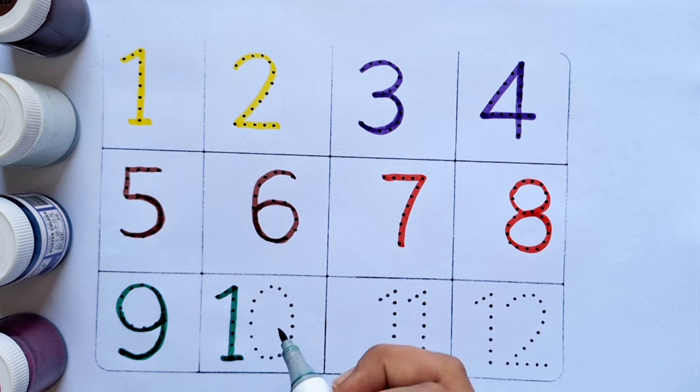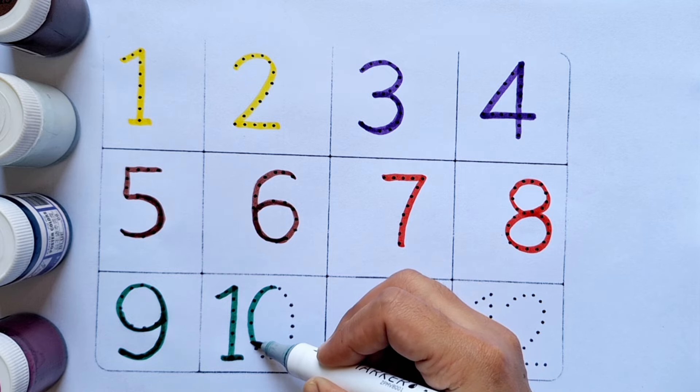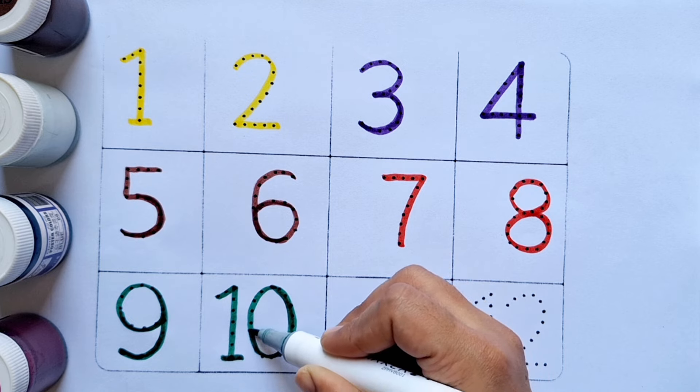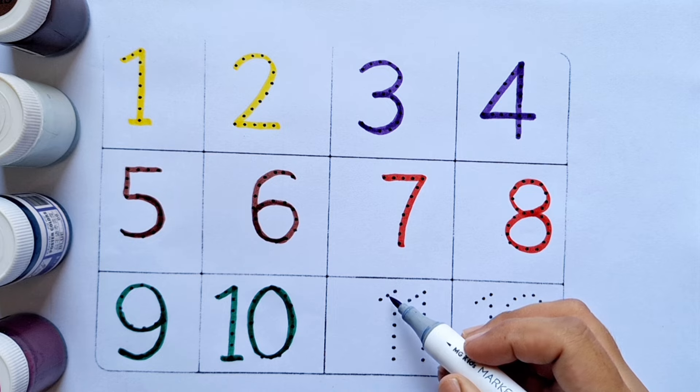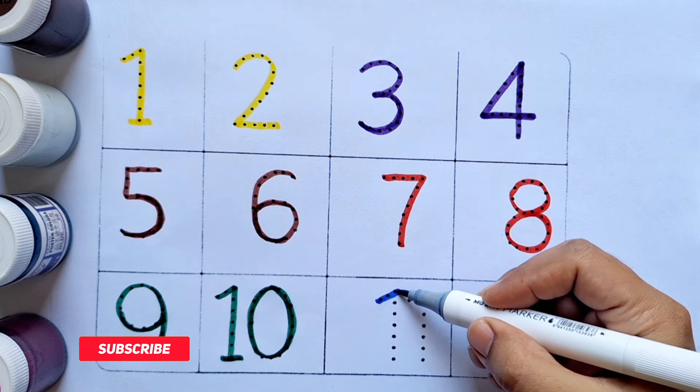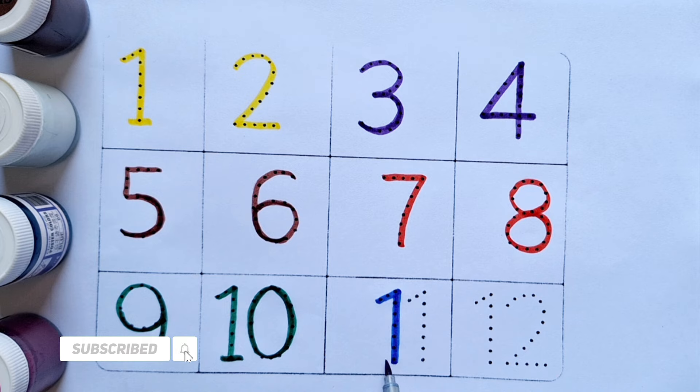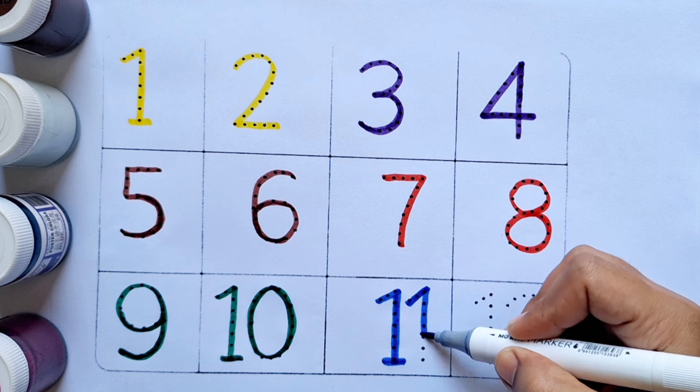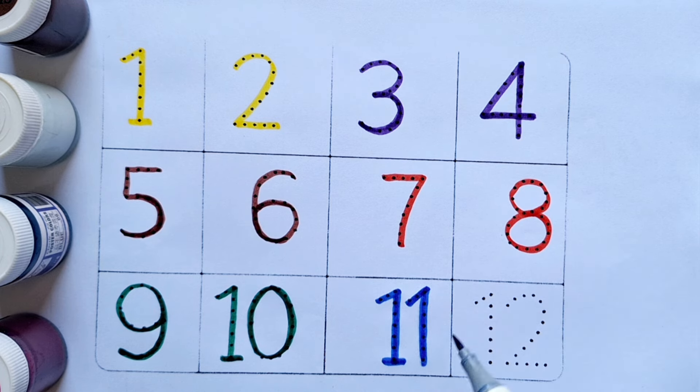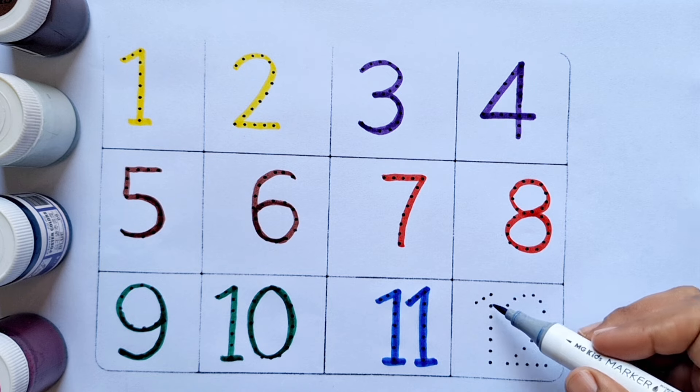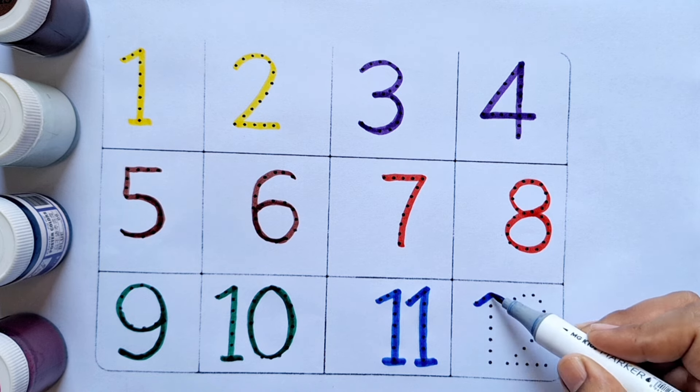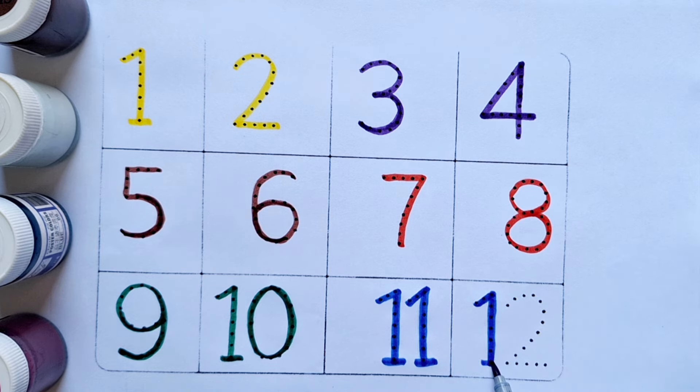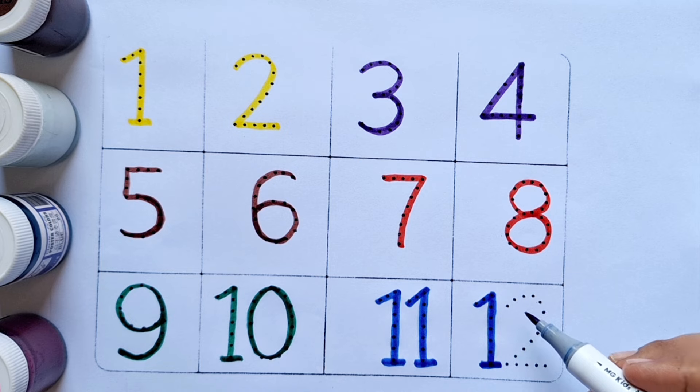Ten. One zero, ten. After nine comes ten. Eleven. One one, eleven. After ten comes eleven. Twelve. One two, twelve. After eleven comes twelve.